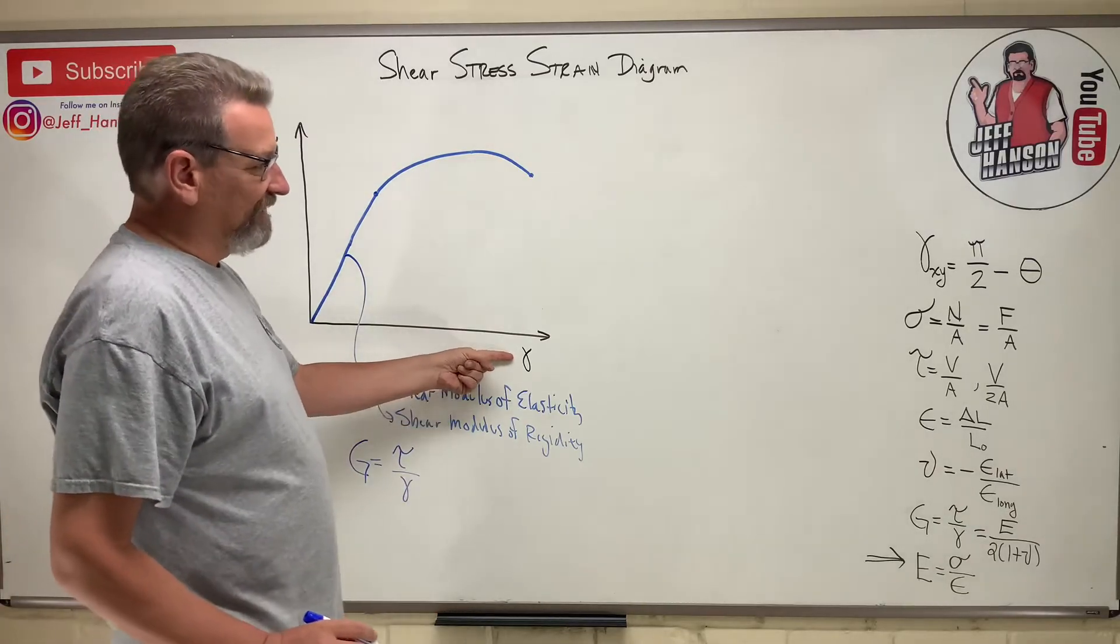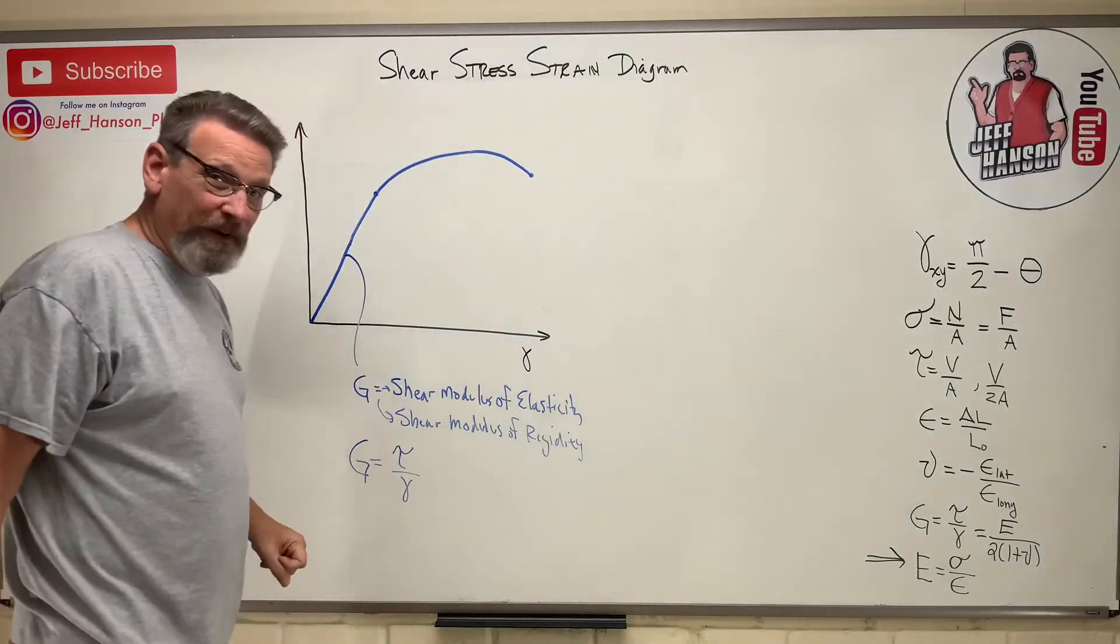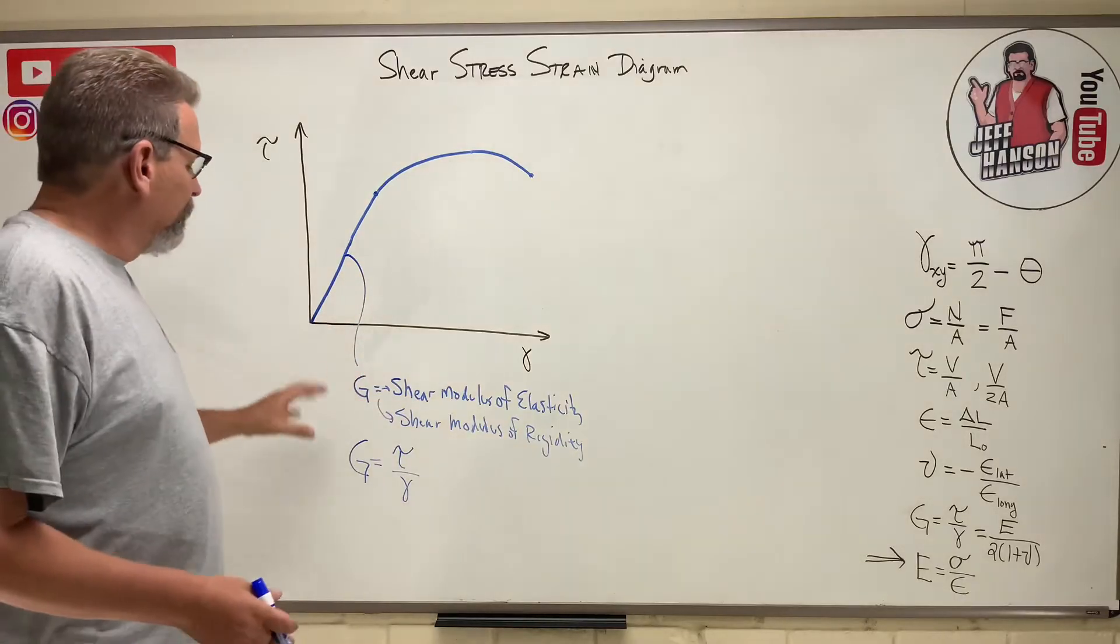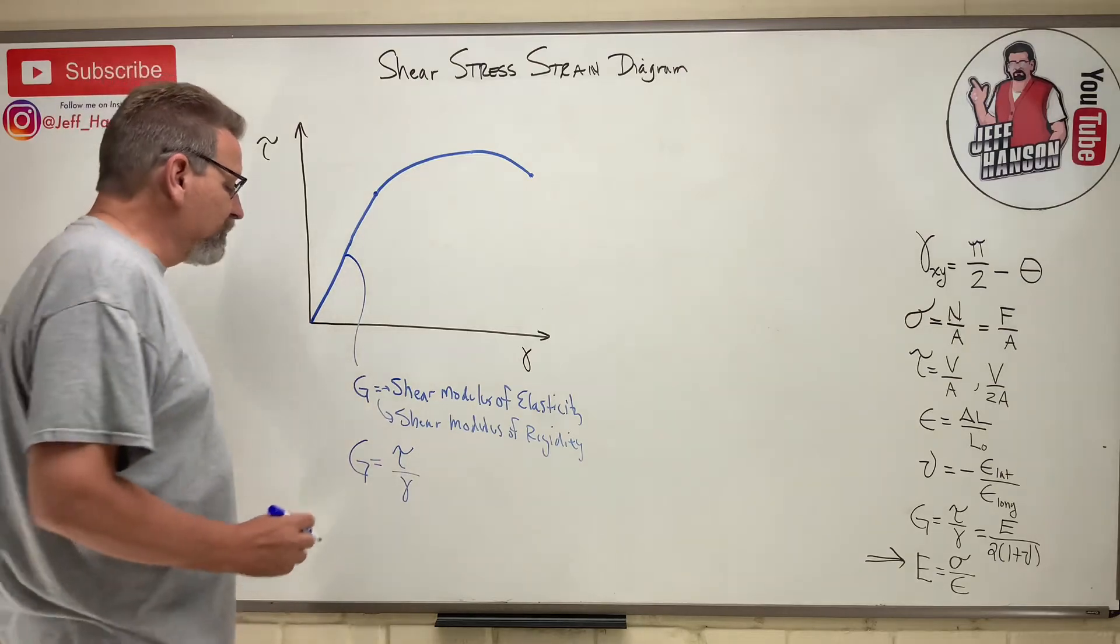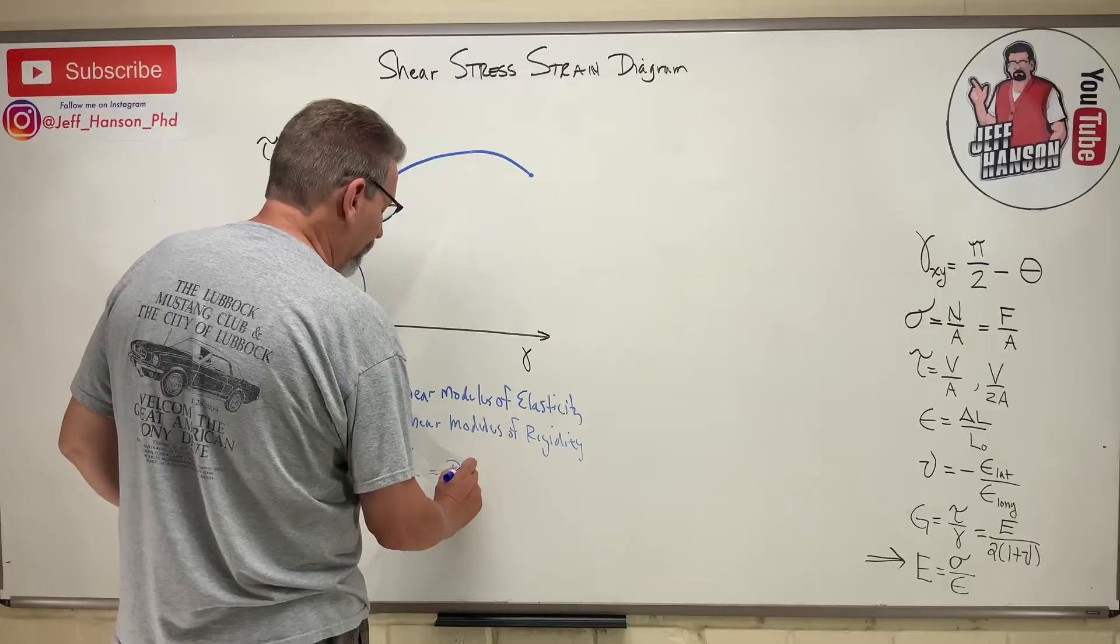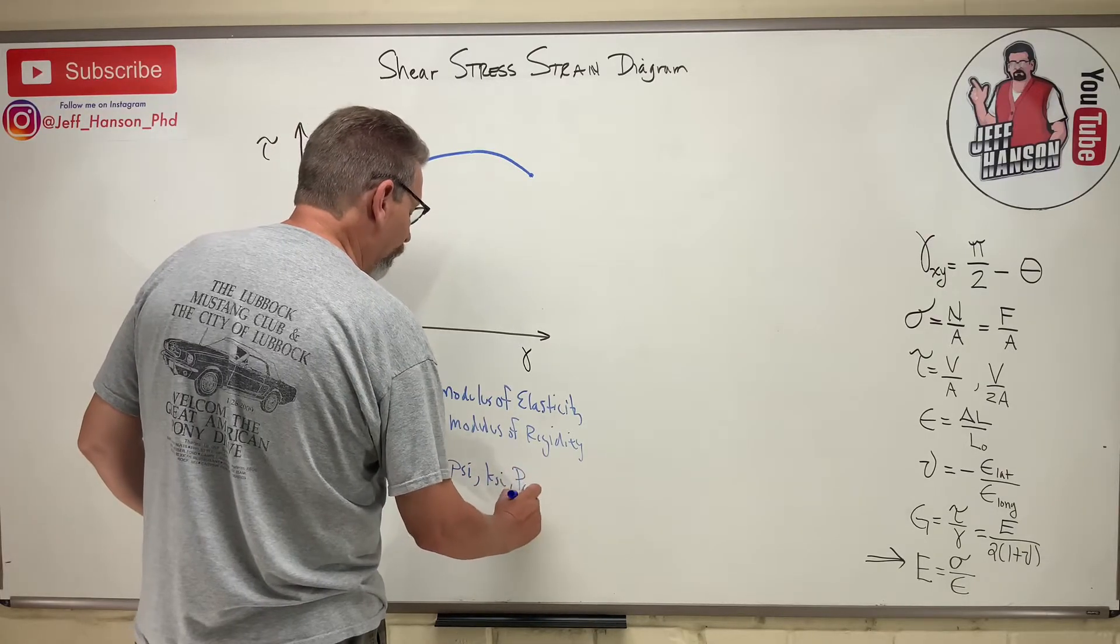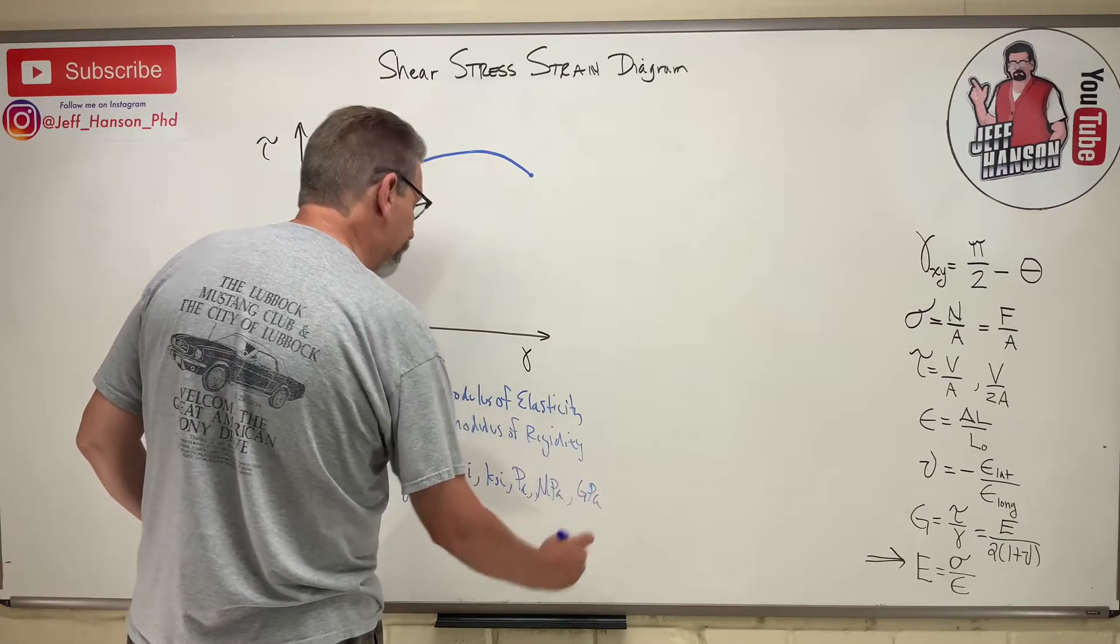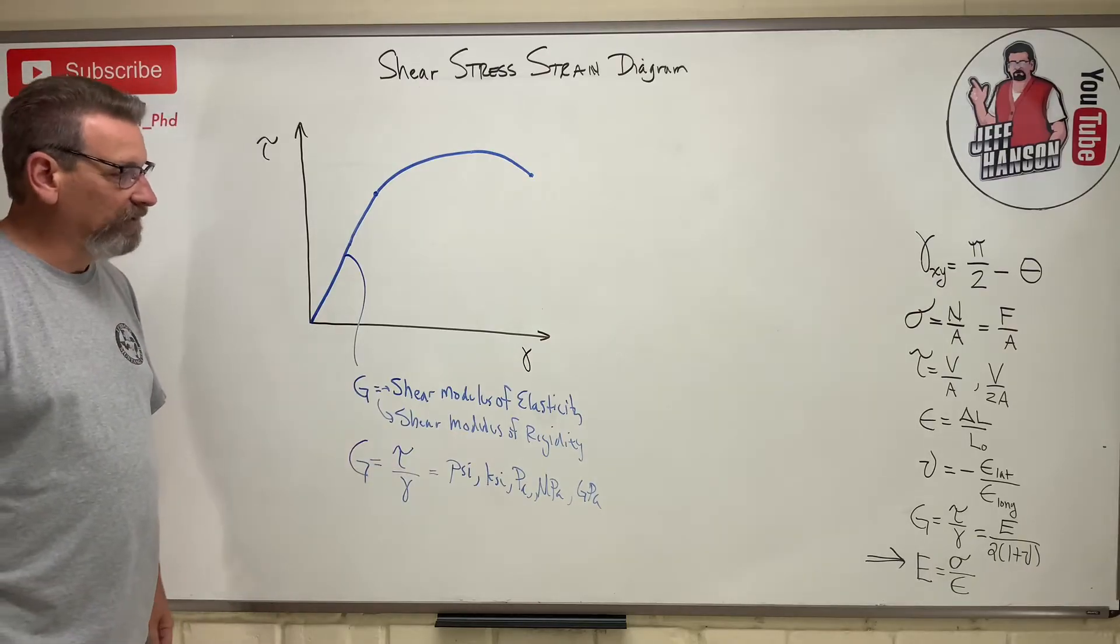And let's see, what is this in? What is shear strain in? Shear strain was in radians. Remember it was in radians, and radians is a unitless thing. So the modulus of, the shear modulus of elasticity is going to have the same units as tau, which is either PSI, KSI, Pascals, or Mega Pascals, or you could have Giga Pascals. So it's going to have the same units as tau.